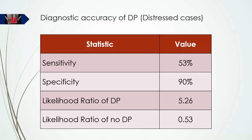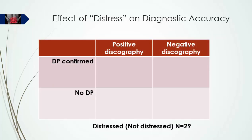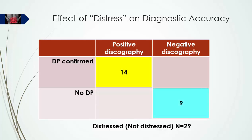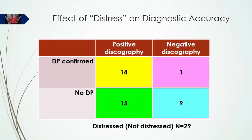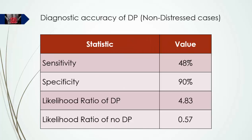For the 29 patients classified as not distressed by the DRAM instrument, there was again just one false positive. The diagnostic accuracy values are very similar to the distressed subgroup, actually slightly worse, with sensitivity at 48% and specificity remaining high at 90%. The positive likelihood ratio of a positive test is just under 5.